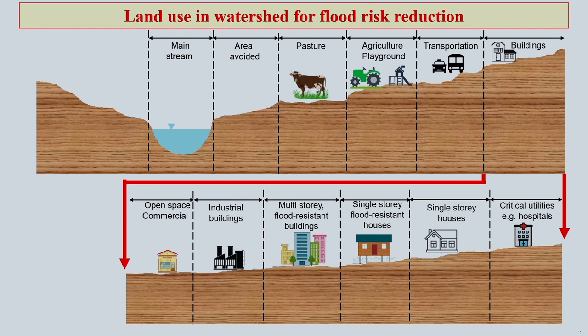If you see in this figure, this is your water area, the mainstream. Now ideally how the land use should be placed — immediately after this mainstream water area, ideally we should have almost nothing here in that first closest area to the mainstream.